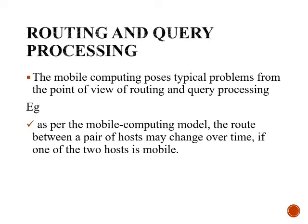Routing and querying process: mobile computing poses a typical problem from the point of view of routing and querying. The mobile computing model also directly affects the database querying process. For example, as per the mobile computing model, the route between a pair of hosts may change over time if one of the two hosts is mobile — that is because energy is limited.